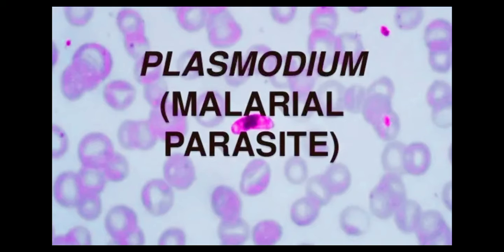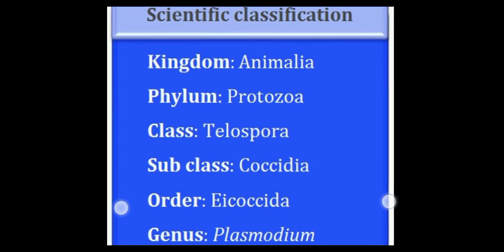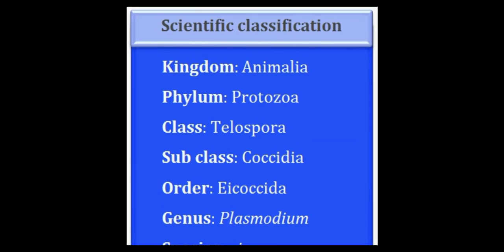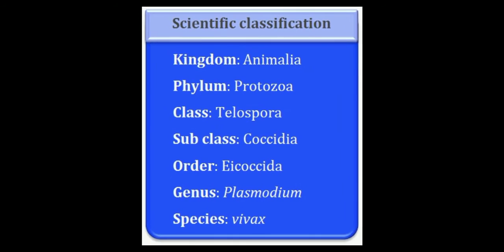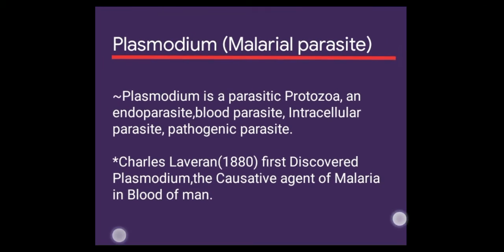Plasmodium is a protozoa, also known as the malaria parasite. The scientific classification: it belongs to kingdom Animalia, phylum Protozoa, class Telospora, subclass Coccidia, order Eucoccida, genus Plasmodium, and there are 5 species.